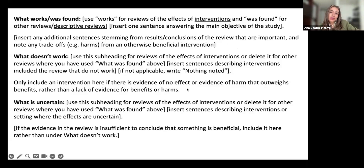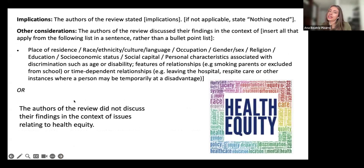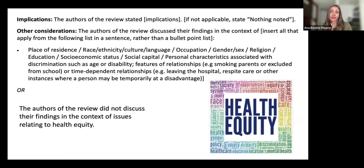If something is not applicable, we write 'nothing noted.' We suggest only including an intervention under 'what doesn't work' if there's evidence of no effect or evidence of harm that outweighs benefits, rather than a lack of evidence. The 'what is uncertain' section is used for reviews of effects of interventions — and if the evidence is insufficient to conclude something is beneficial, we include it there rather than under 'what doesn't work.' Then we go to implications: if the authors stated some implications, we include them; otherwise we state 'nothing noted.' Other considerations come from the discussion or conclusion where authors discuss findings in different contexts.